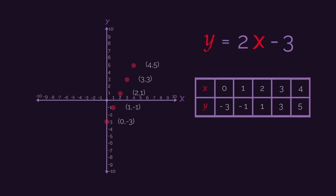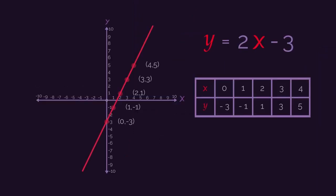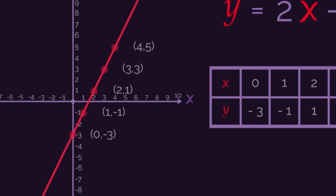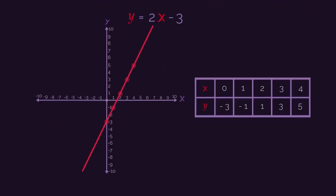So now we just need to join up our coordinates with a straight line using a ruler. Make sure you extend the line the whole way across the graph. And label it with its equation. Simple.